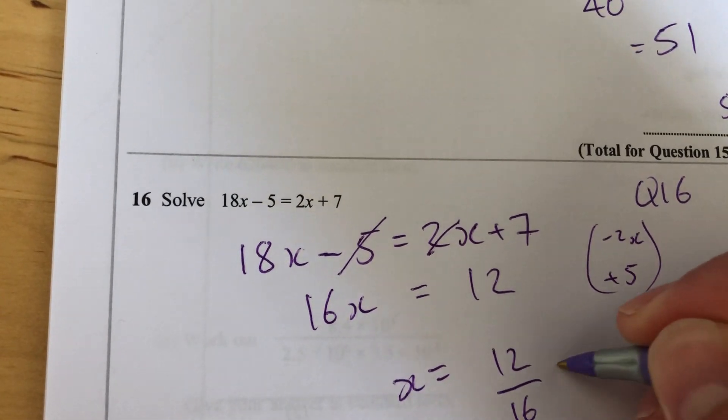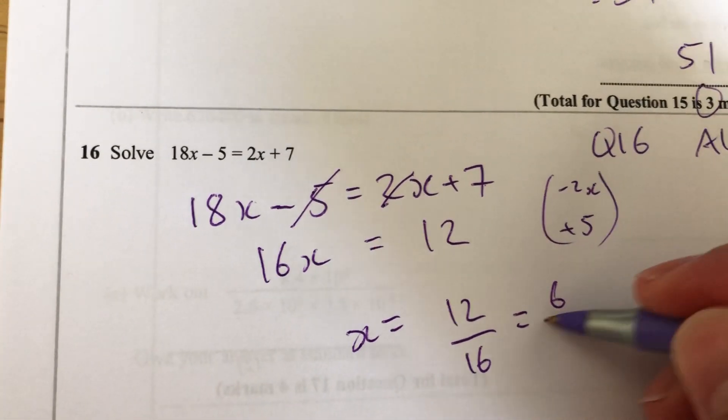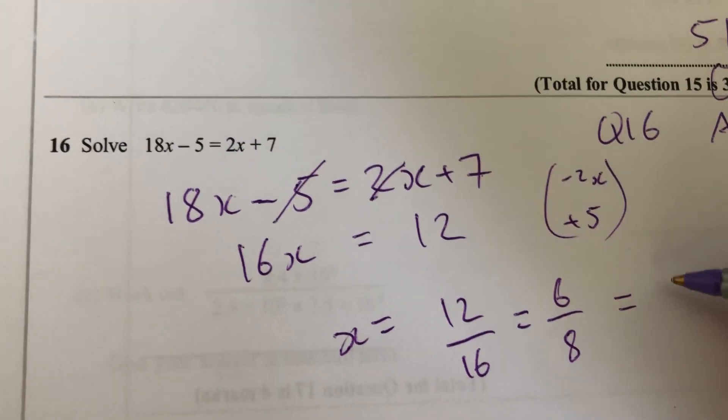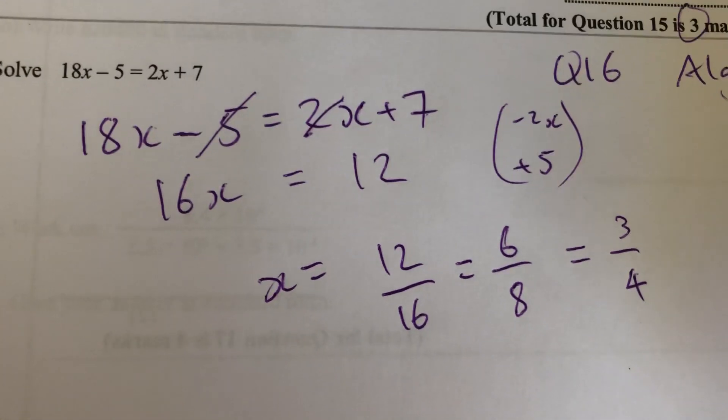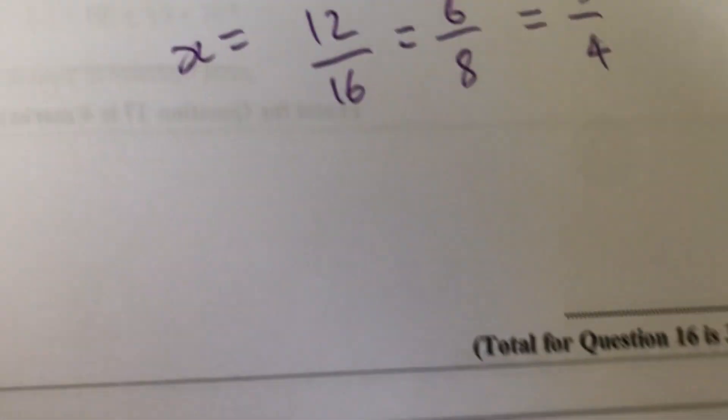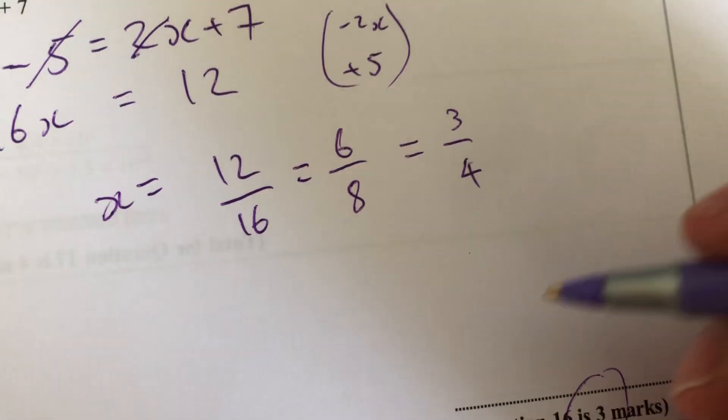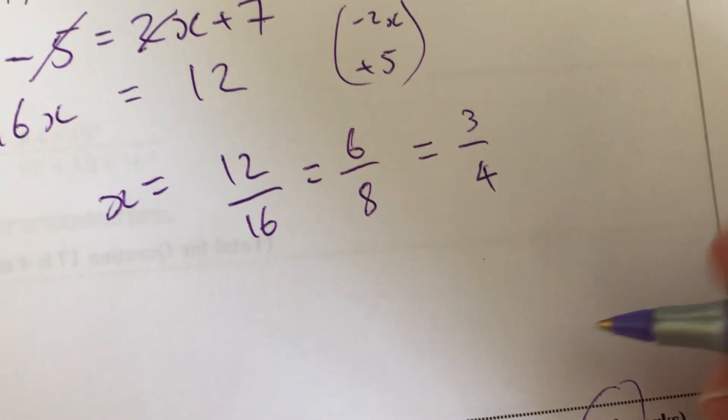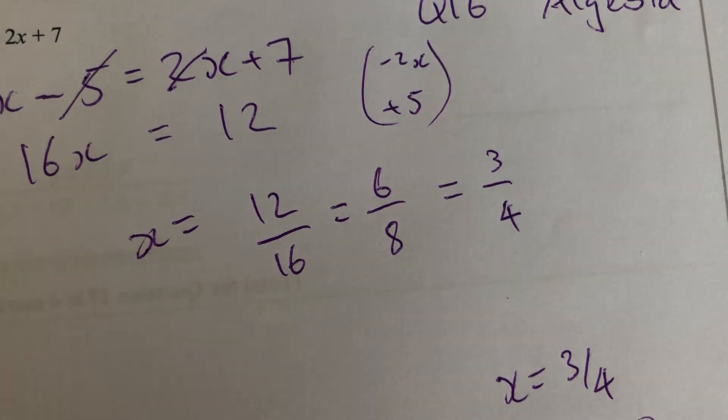12 over 16. Let's simplify that. They're both even. So 6 over 8, so 3 quarters. And I could just check that on my calculator. That's the final answer. I'll just write that down there. It's 3 marks. It's actually quite a lot of marks for what I've done there. x equals 3 over 4.